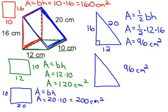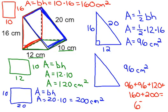Then to get our entire surface area, we need to add all of these pieces together. So you're going to add 96 for each of the triangles, plus 120 for the green rectangle, plus 160 for the red rectangle, plus 200 for the third rectangle. Go ahead and add them up. And you should get an answer of 672 square centimeters for your total surface area.